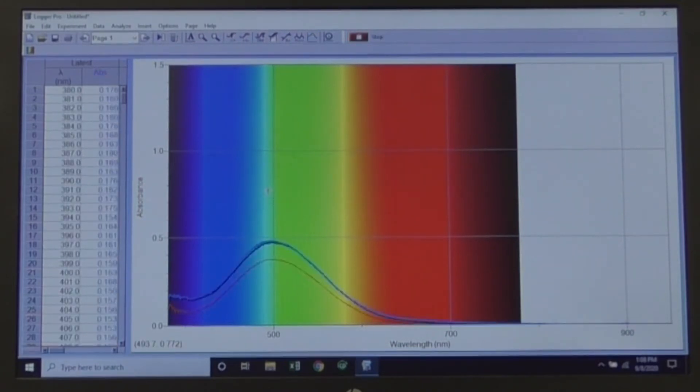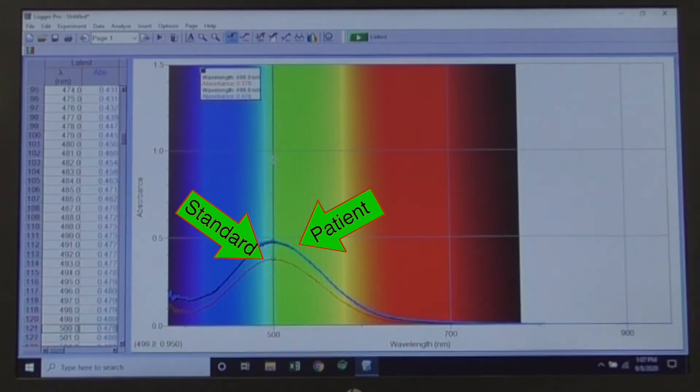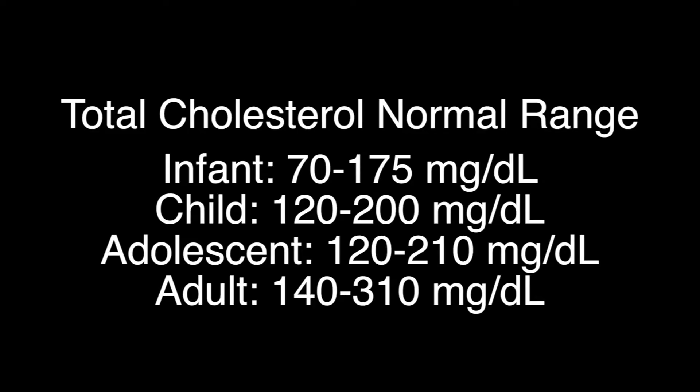In this example, the patient's result is higher than the standard. Refer to your lab manual and perform the calculations needed. The results should support what your spectra shows. Record and interpret your patient's results based on the values given in your laboratory notebook.